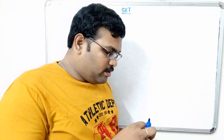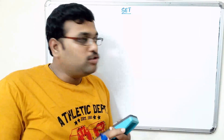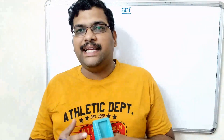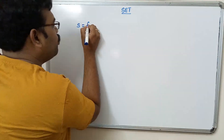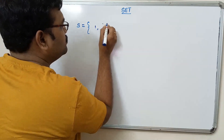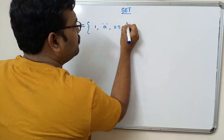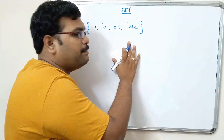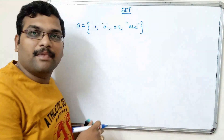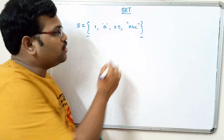A set is similar to the list and a tuple — it is also a collection of multiple elements of different data types. The only difference is that the elements of a set are enclosed in curly braces separated with commas. For example: s = {1, 'a', 2.5, 'bbc'} — this is a set, a collection of multiple elements of different data types.